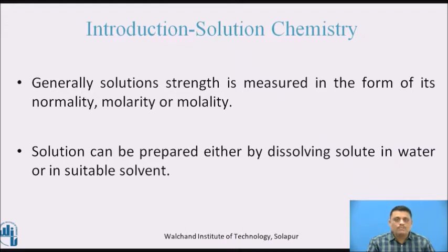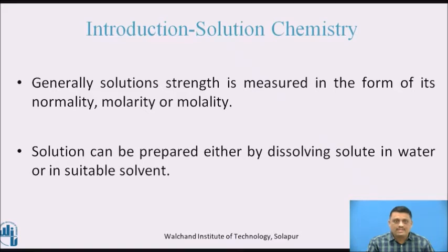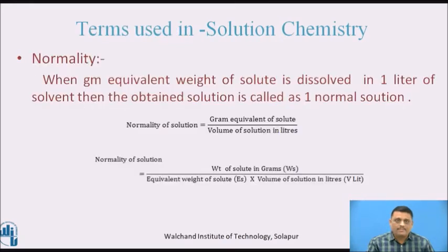In short, what do we mean by solution chemistry? Solution chemistry is the main part of analytical chemistry where we analyze a given sample of material. The analysis is carried out by treating the material with a suitable solution, then the observations are recorded and the calculation is made. Now we will come to the first term of solution chemistry, which is known as normality. It is the term generally used to express the strength of a given solution.